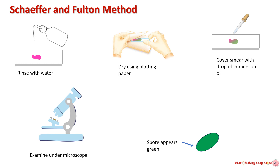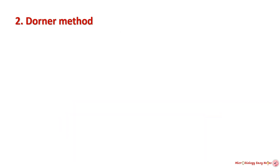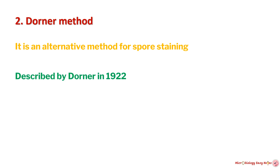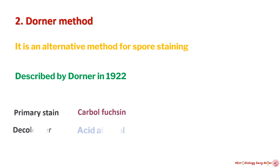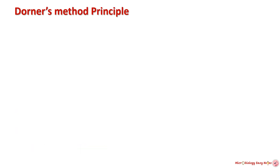Observation: endospores will appear as green structures while vegetative cells will appear pink or red due to the safranin counterstain. Dorner's method is an alternative method for staining endospores, published by Dorner in 1922. This method utilizes carbolfuchsin as the primary stain, acid alcohol as a decolorizer, and nigrosin as a counterstain.